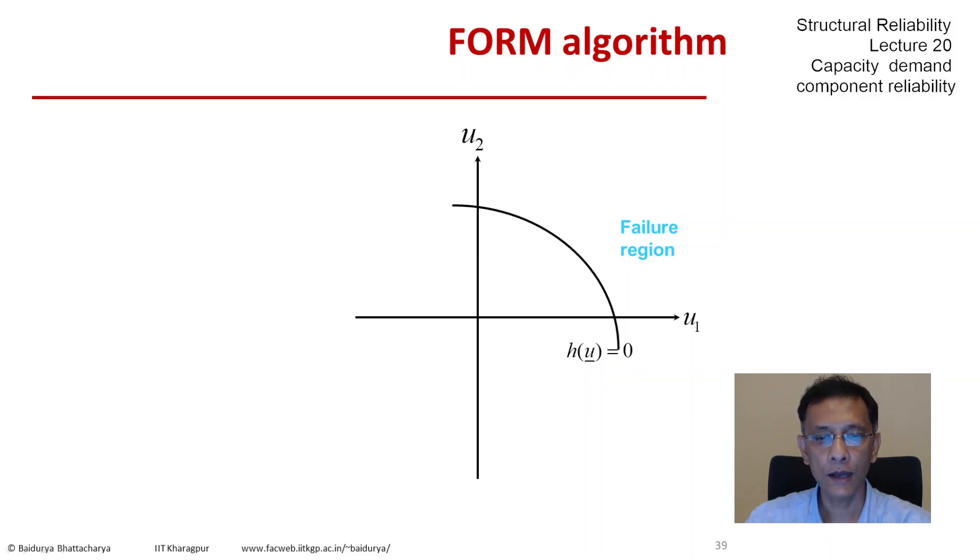In terms of a flowchart, let's first introduce the gradient-based algorithm for finding the minimum distance point. Here we have the u1-u2 space in two dimensions, with h equals zero as the mapped limit state equation, and the failure region is also known. So we need a method to find the minimum distance point.